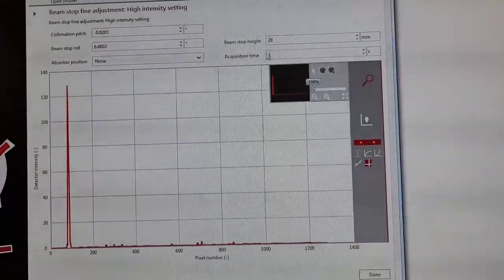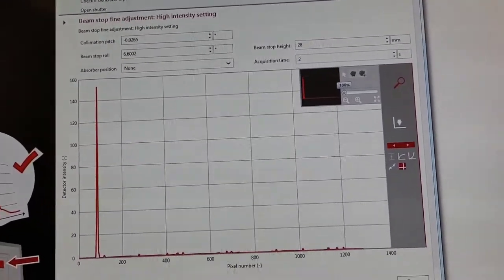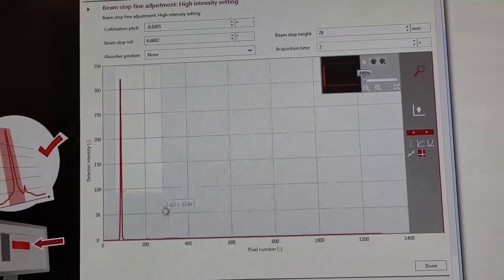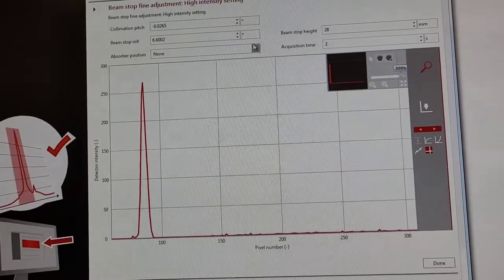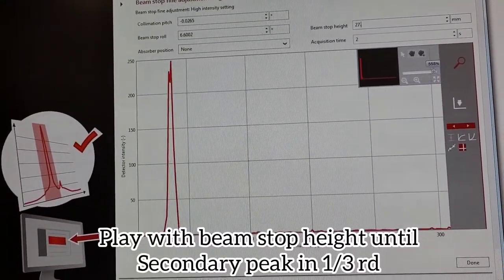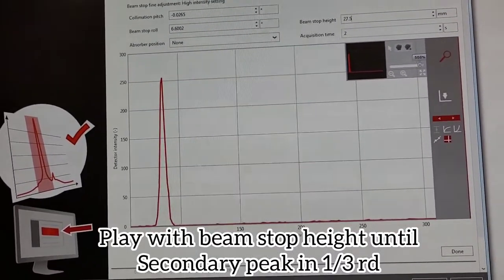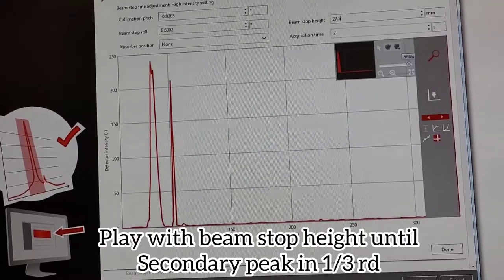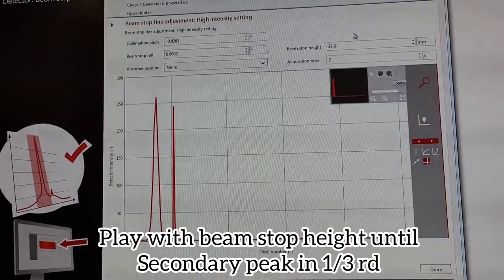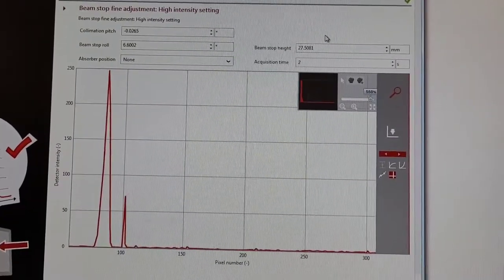You follow these steps. You first do alignment for high intensity setting and then a high resolution setting. Put the absorption at none, the acquisition time at 2. Then you play with the beam stop height until the secondary beam is about a third of the primary one. Once you do that you select okay and go ahead and do exactly the same thing for the high resolution setting.